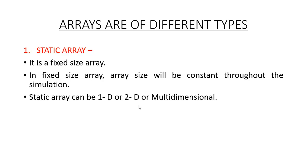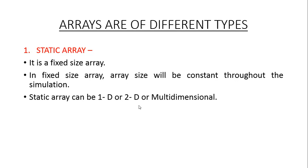Arrays can be of different types. A static array is a fixed-size array, which means the array size will be constant throughout the simulation. Static arrays can be one-dimensional, two-dimensional, or more than two-dimensional, which are called multidimensional. These are examples of array declarations of fixed size — we can have a fixed-size single-dimensional array or a fixed-size multidimensional array.